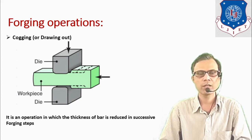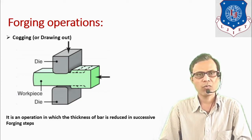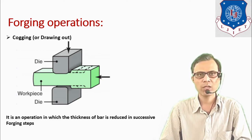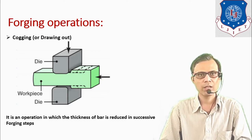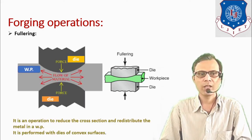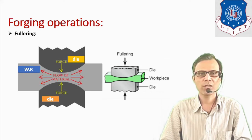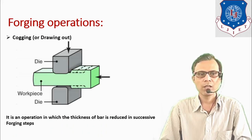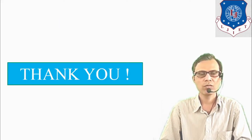In this session we discussed about the forging process — what is forging, the different types such as closed die forging, open die forging, and flashless forging, the different driving mechanisms, and the different types of forging operations such as fullering operation, edging operation, upsetting operation, cogging operation, and others. Thank you for watching.